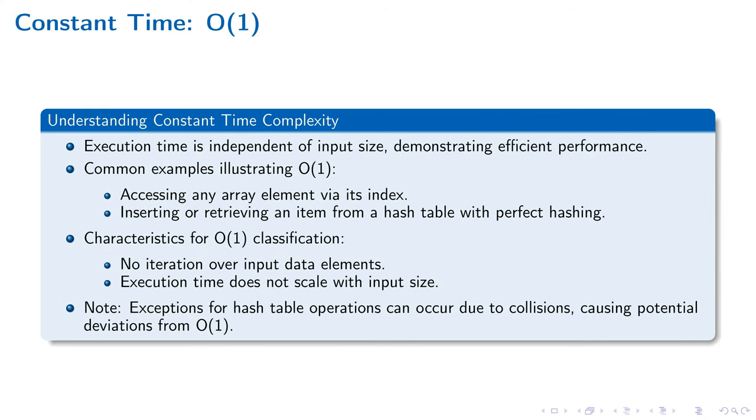When tackling efficiency in software systems, understanding constant time complexity, denoted as O(1), is essential. Operations like accessing an element in an array by index or utilizing a hash table with perfect hashing encapsulate this concept.